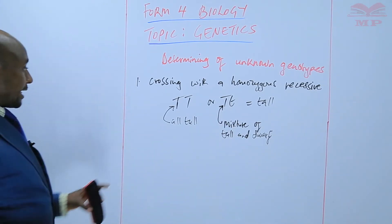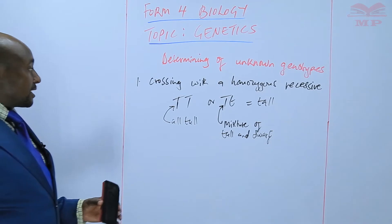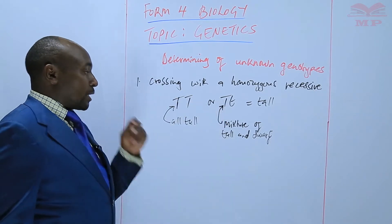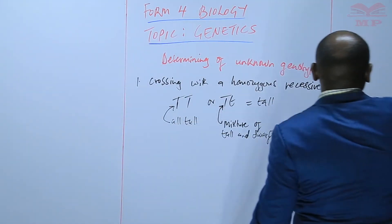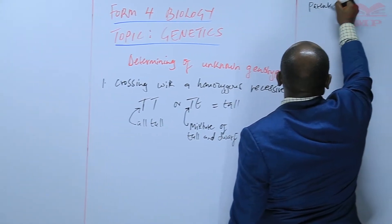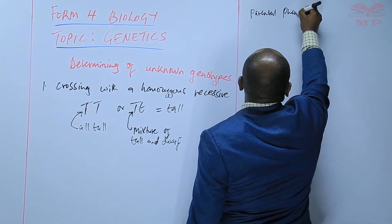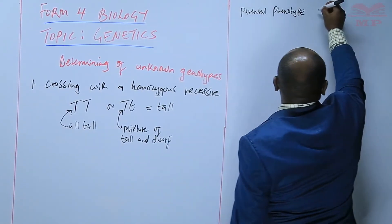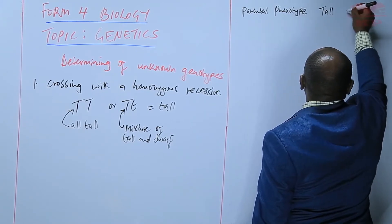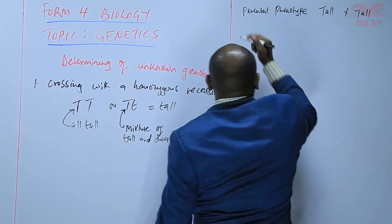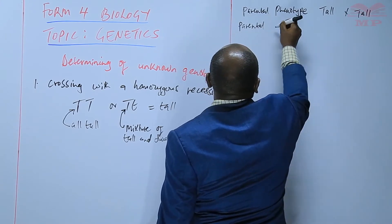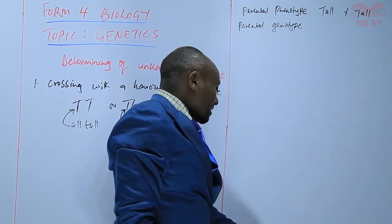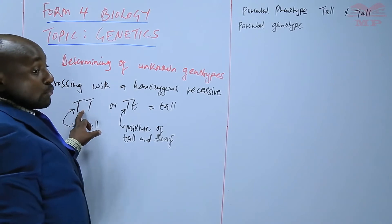Now I would like us to demonstrate these crosses assuming both scenarios. For the first scenario, we start with the parental phenotype — remember we always start with the phenotype before we go to the genotype. So the phenotype is tall crossed with tall. The parental genotype — we assume the tallness is homozygous.